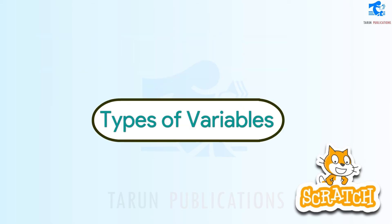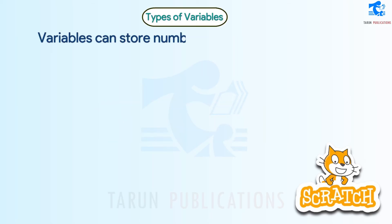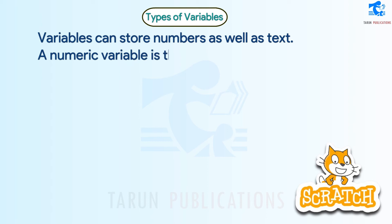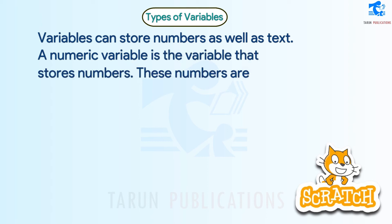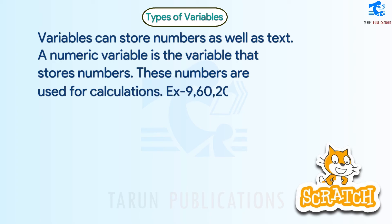Types of variables: Variables can store numbers as well as text. A numeric variable is a variable that stores numbers which are used for calculations. Examples include: X9, 60, 200, 98, 76, etc.